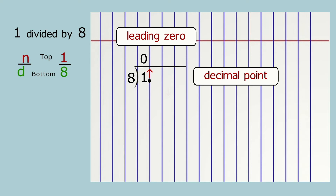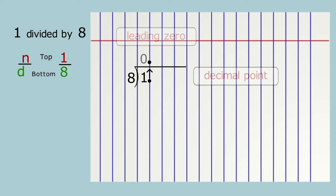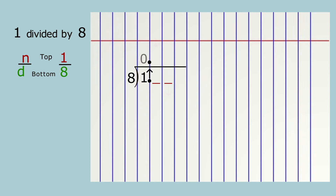Use an arrow to show what you did. We have no tenths, no hundredths, and no thousandths, but we will write some zeros just to help us divide. We could stop after two decimal places to estimate the percent, or we can continue to the third decimal place. Write those zeros between the lines to keep your columns straight.